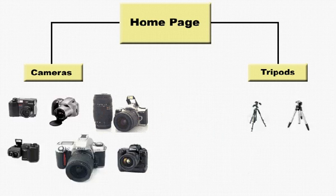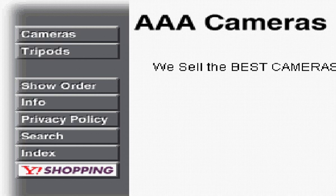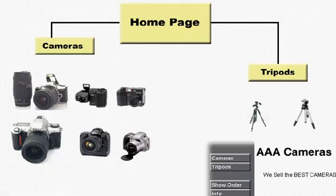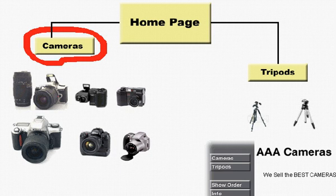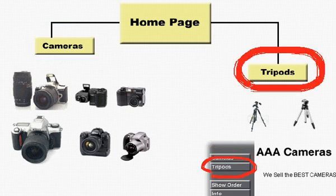When we create these sections, our store becomes a more structured site with a home page and links to each section page. Also, when you create these sections, a button is created on the sidebar. When we create the camera section, this camera button was automatically created. The same is true for the tripod section.